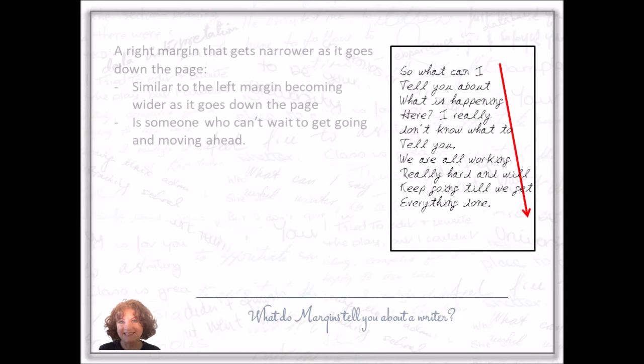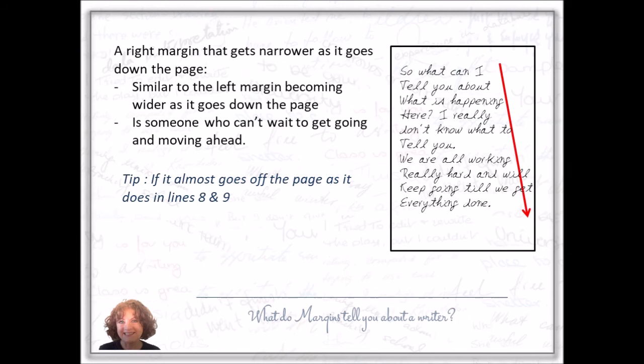A right margin that gets narrower as it goes down the page is similar to the left margin becoming wider as it goes down the page. It's someone who can't wait to get going and moving ahead. Tip: if it almost goes off the page, as it does in lines 8 and 9 in the example, it's someone who just can't wait and is pushing the limits to move ahead.